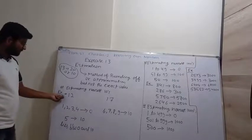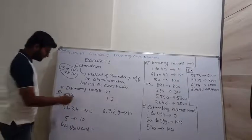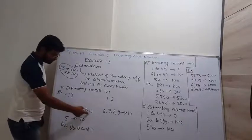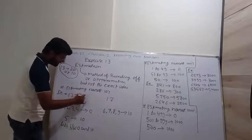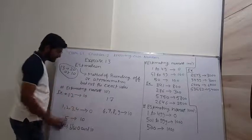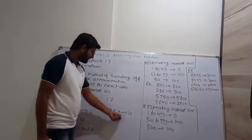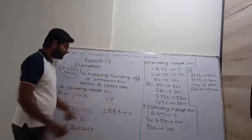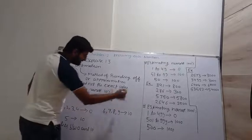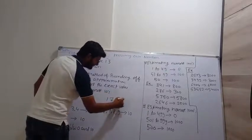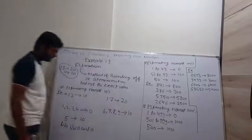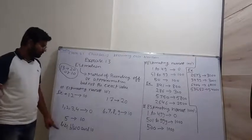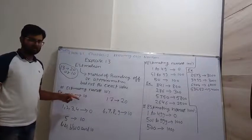For example, 12: digits 1, 2, 3, 4 at the units place are converted into 0, so 12 is converted into 10. And 6, 7, 8, 9 at the units place are converted into the next 10, so 17 is converted into 20. This is the rule we follow for estimation.